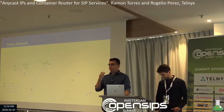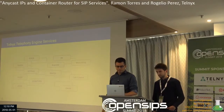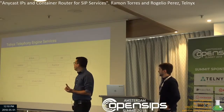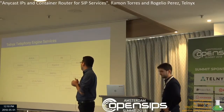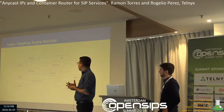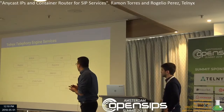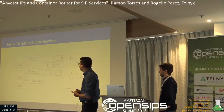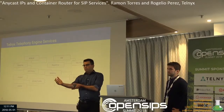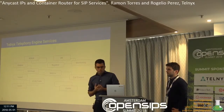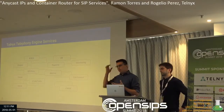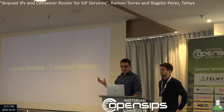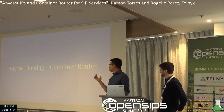This is how our telephony engine looks. We use the distributed architecture paradigm where microservices run inside Docker. This allows us to do rapid deployments and automate all of them. So we have both: a private global network and a distributed architecture. We asked ourselves how we could leverage both of these assets to achieve our goals. And the answer is Anycast routing plus Container Router — we're going to explain both of them.